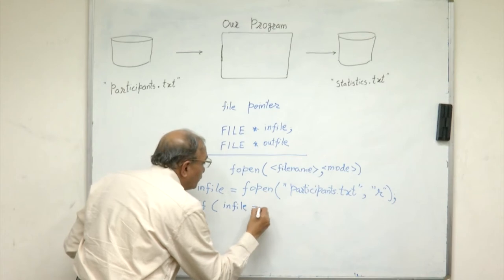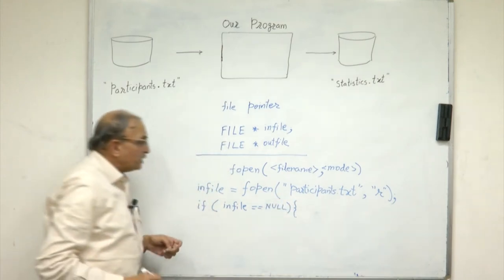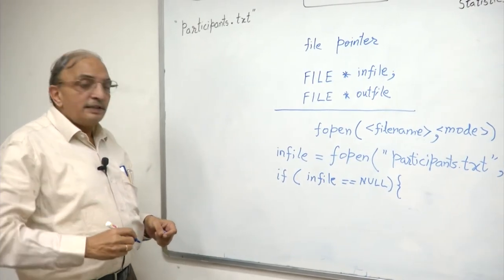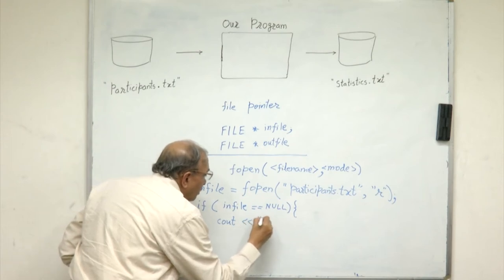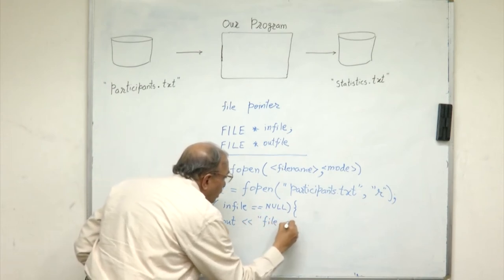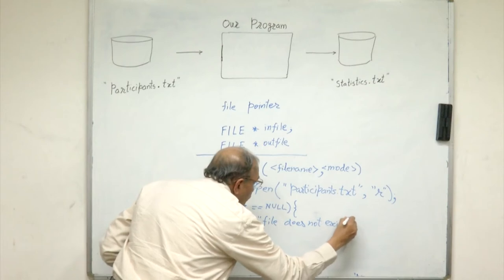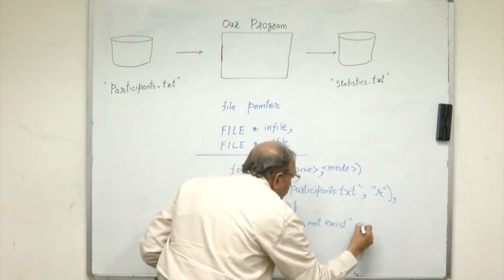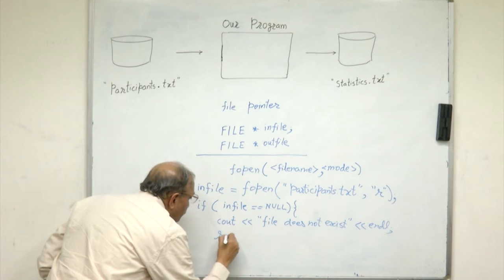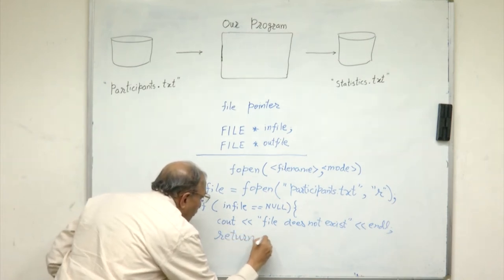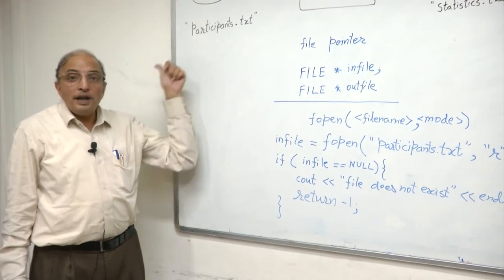If infile equals null, that means I was not able to open the file. I can simply output a message, for example, I can say 'file does not exist' and give this message on my terminal, and then return -1. This is the typical way in which the opening of a file is handled.